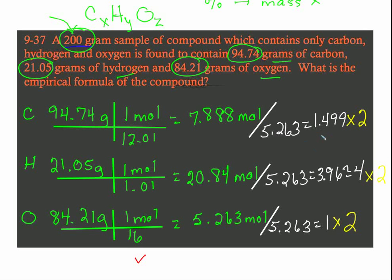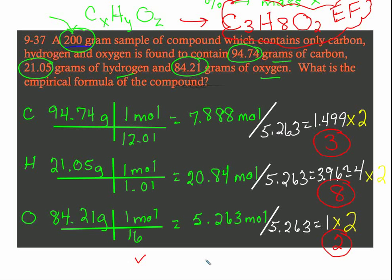When I do that, we are going to get 1.5 times 2 is 3, 4 times 2 is 8, and 1 times 2 is 2. So now we know our empirical formula is C3H8O2. That's our empirical, not our actual formula. There could be bunches of molecules that have that. That's our empirical formula.